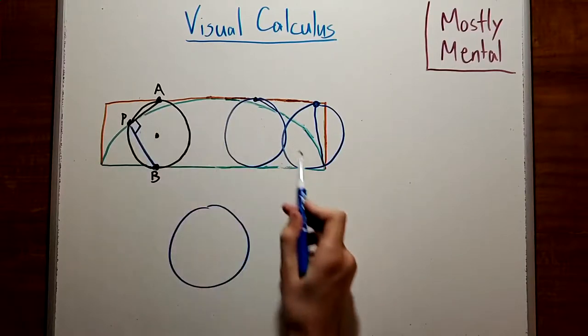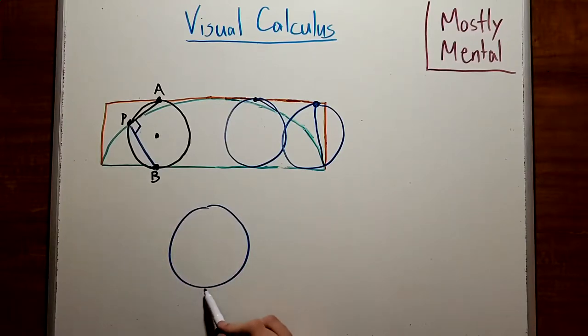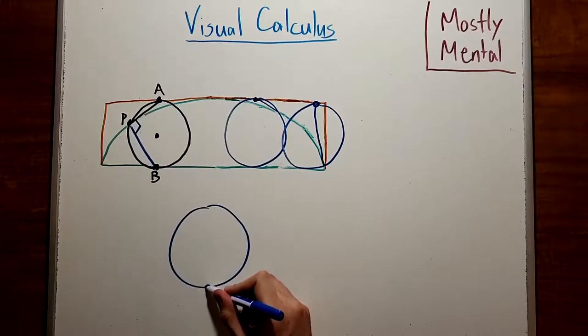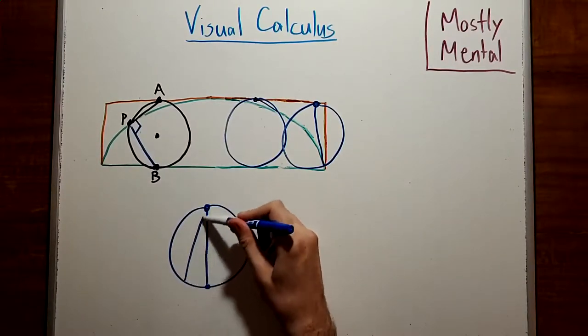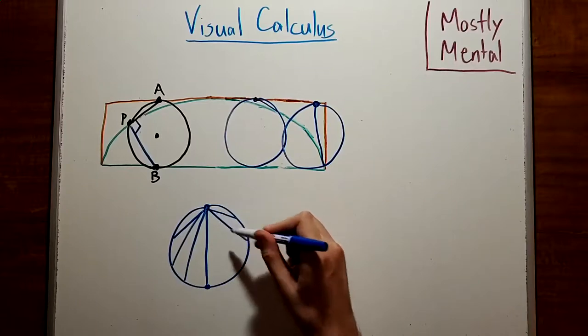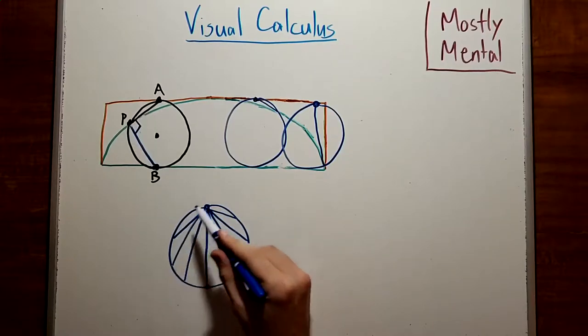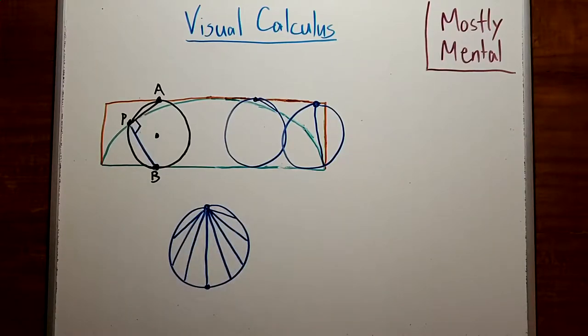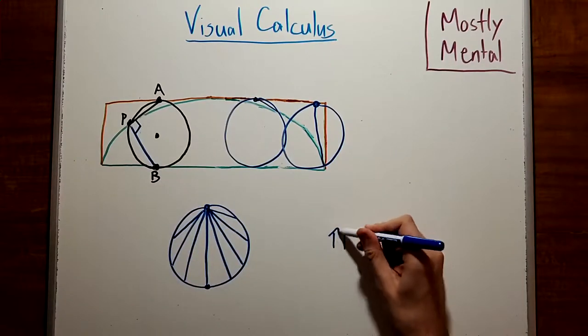We get our cycloid from a full revolution of the circle. So P starts at the bottom and makes its way around the circle. And along the way, each tangent segment goes from P through to the top point of the circle. As P goes around, it gives us every possible tangent segment. And it fills out this circle.